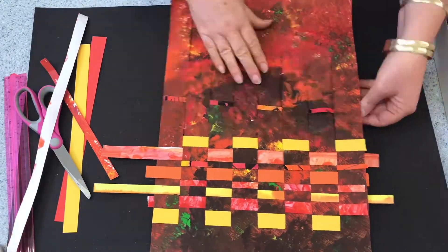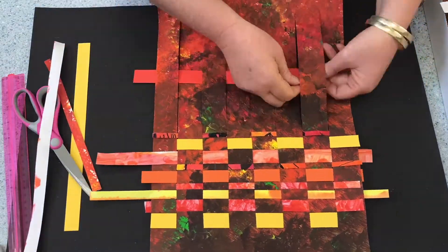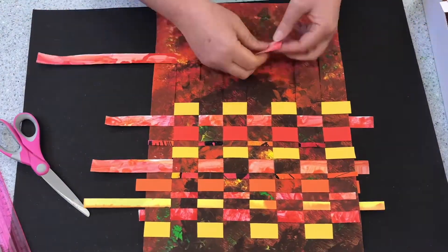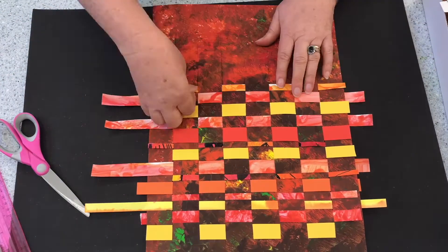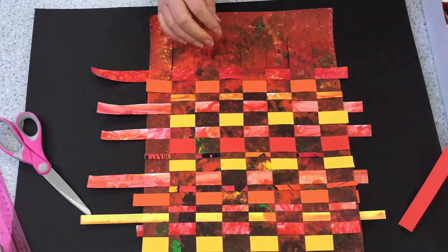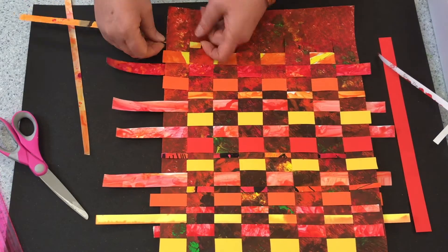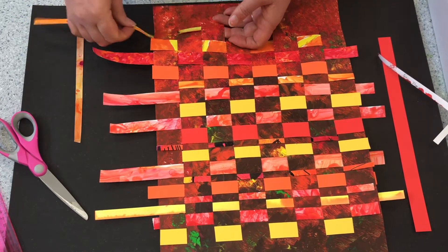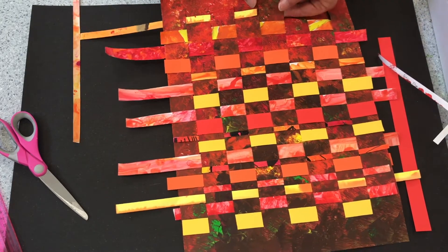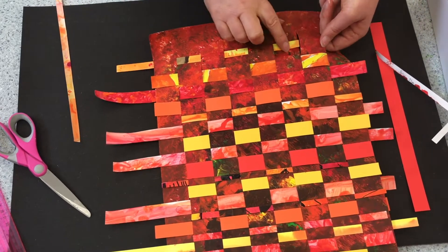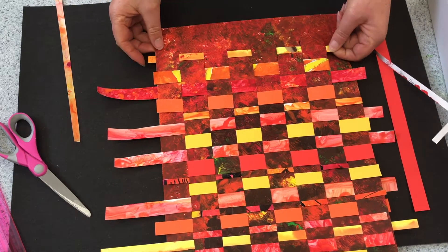One important thing to remember about weaving is that every strip goes through alternate to the one before. The aim is to create a checkerboard pattern. It's always easier to start weaving a strip near the center of the loom when it's really loose, but then push each strip up to the top as you go in order to create a lovely tight strong mat.